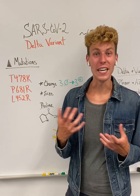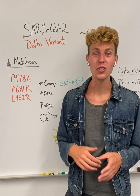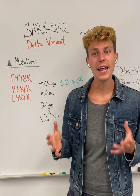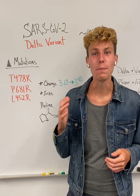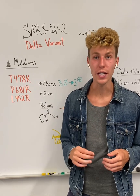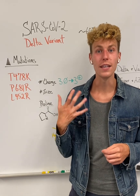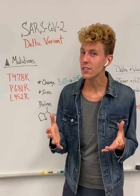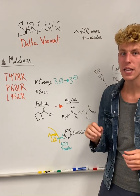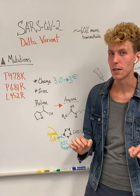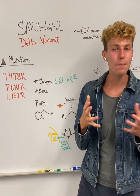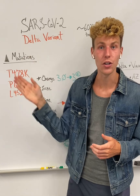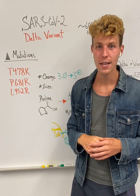You may have heard of the Delta variant of SARS-CoV-2 that has been circulating around the world, and today I want to break down the biochemical mutations that have occurred that created this Delta variant. The Delta variant has been shown to be 60% more transmittable, and it's hypothesized that this is due to certain mutations that have occurred on the spike protein.